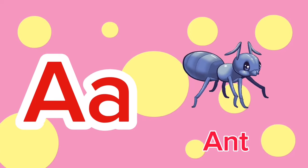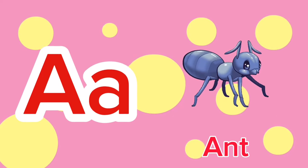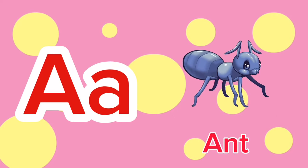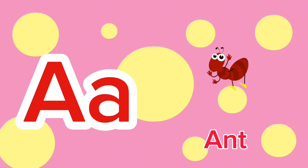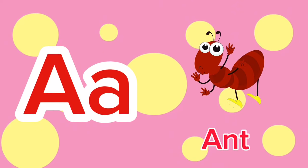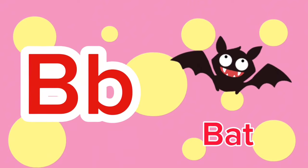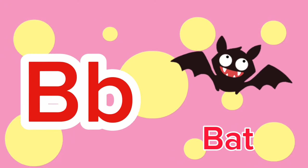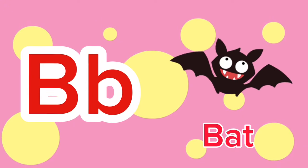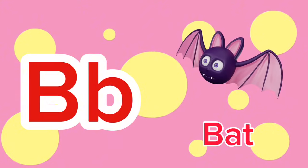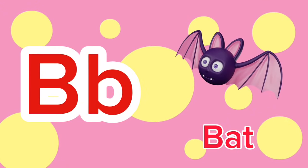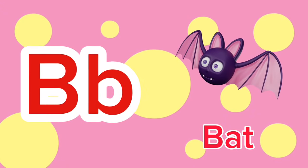A is for Ant. A-a-ant. A is for Ant. A-a-a. B is for Bat. B-b-bat. B is for Bat. B-b-b.